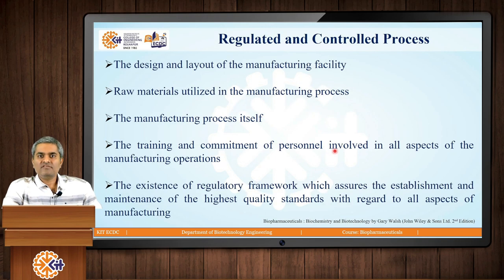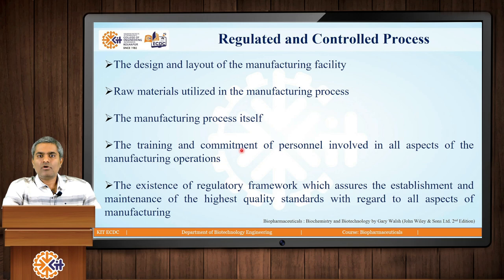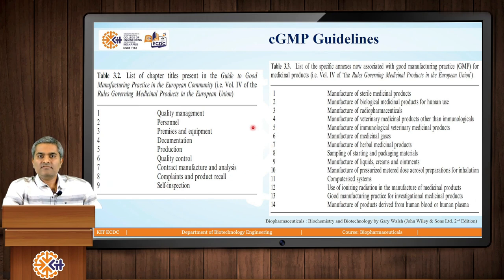Let us understand what it means for a process to be regulated and controlled. It means that the design and layout of the manufacturing facility, the raw materials utilized in the manufacturing process, and the manufacturing process itself are all to be regulated and controlled. It also includes the training and commitment of the personnel involved in all aspects of manufacturing operations. Finally, there must be a regulatory framework that assures the establishment and maintenance of the highest quality standards for all aspects of manufacturing. All these guidelines are given by the respective country authority and are called CGMP — that is, Current Good Manufacturing Practices.